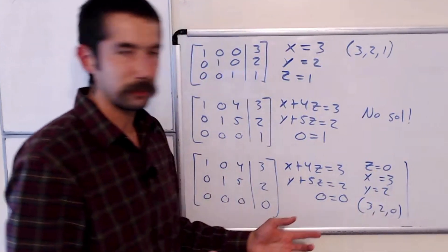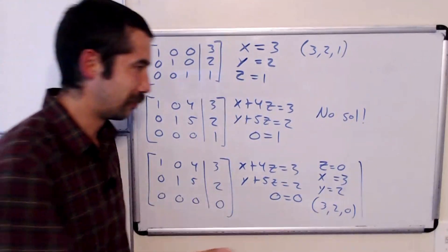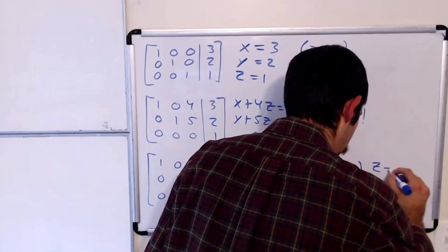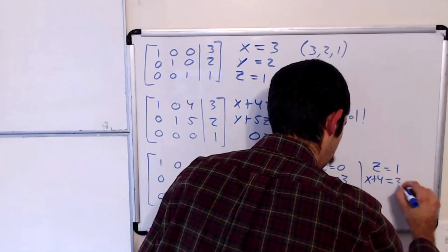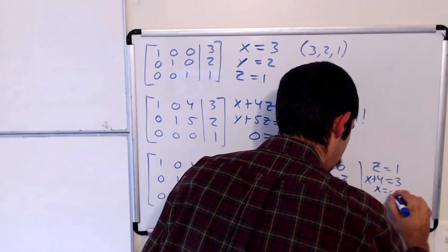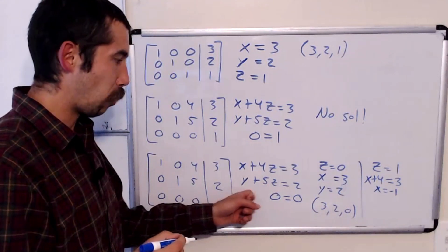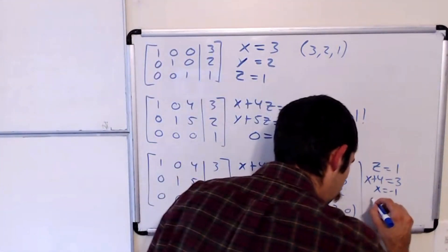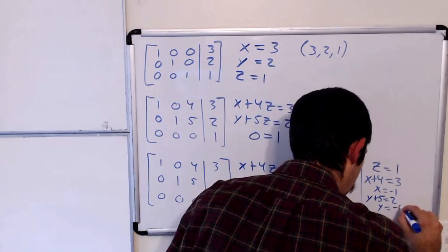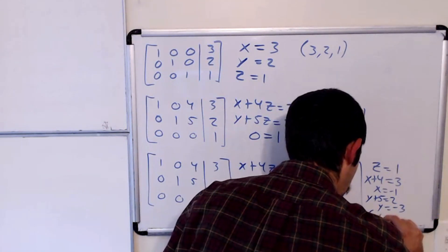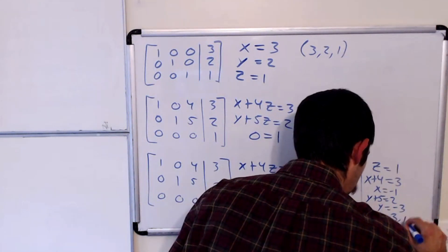Or you could try something like z equals 1. It's another good number to use. So you have x plus 4 equals 3, meaning x equals negative 1. And y plus 5 equals 2, so y equals negative 3. So our point would be negative 1, negative 3, 1.